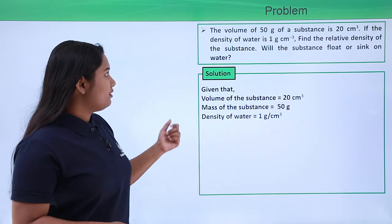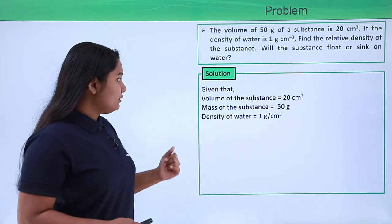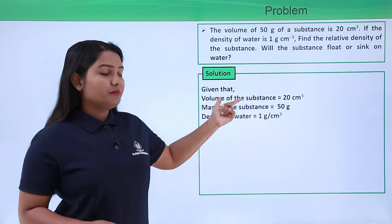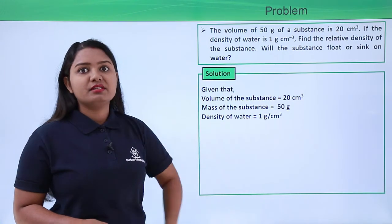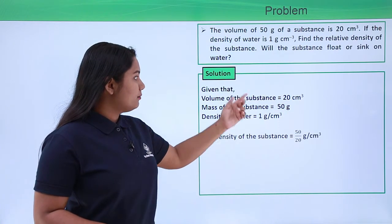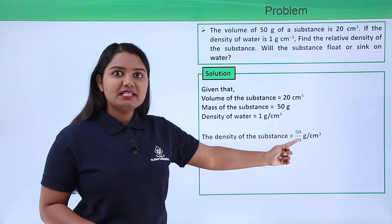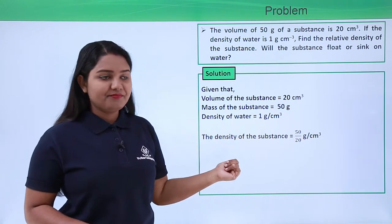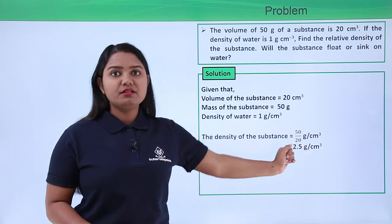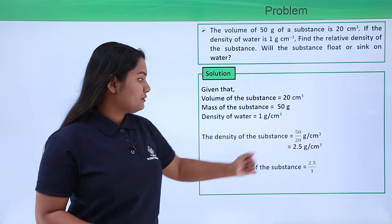First of all we need to find the relative density of the substance. We know the volume and the mass of the substance, so from this we can calculate the density of the substance first. The density of the substance is mass divided by volume, which is 50 divided by 20 grams per centimeter cube. This turns out to be 2.5 grams per centimeter cube. So this is the density of the substance.